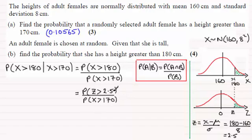Now, to work out the probability of Z being greater than 2.5 is fairly straightforward if you've got a calculator that handles statistical calculations like this. If not, then you're going to have to use tables, and that's going to be exactly the same as working out 1 minus the probability of Z being less than 2.5 standard deviations above the mean. And this is divided by the probability of X being greater than 170, which is this value up here that we worked out in part A. I'll put that in as 0.10565.